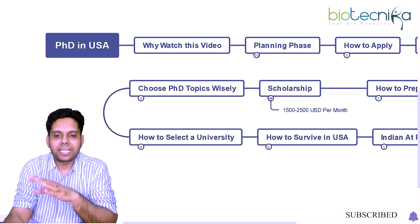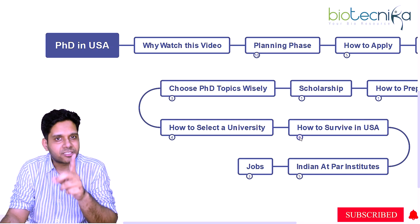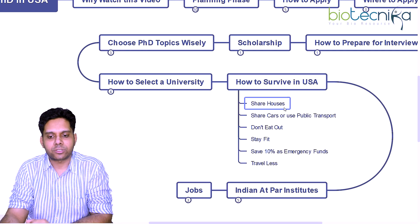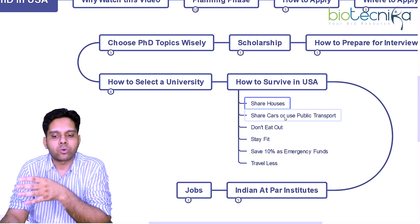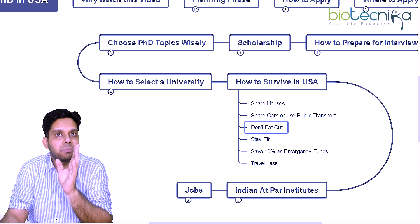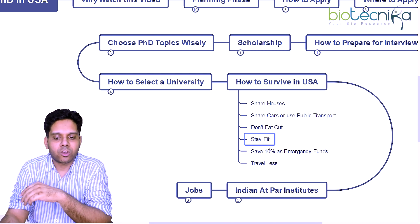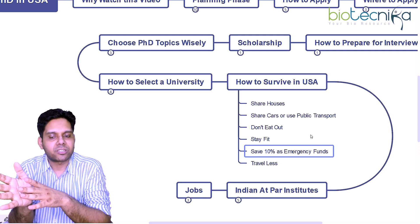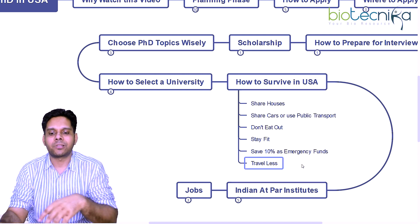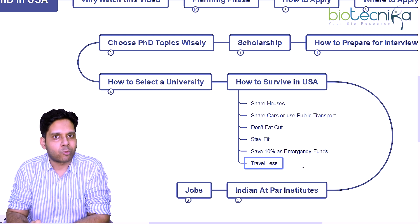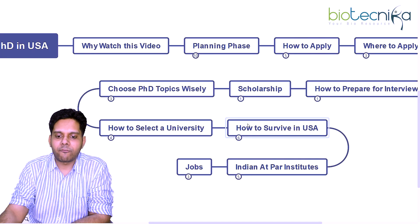Surviving in the USA — the scholarship is very less and the USA is a costly country. First tip: share houses with roommates or fellow Indians. Share cars or use public transport. Please don't eat out — it'll cost you a lot. Stay fit, because if you fall sick the healthcare system is very costly. Always save 10% of your income as emergency funds. Travel as little as possible — I've seen students who enroll and immediately start roaming around the USA, but your PhD fellowship won't support that.